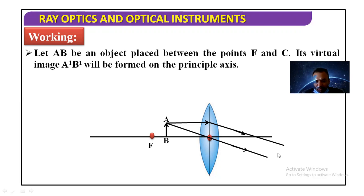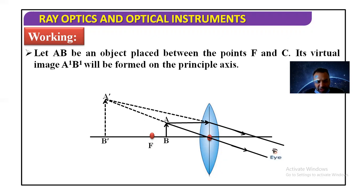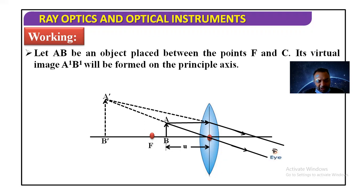There is no chance of formation of a real image on the right side of the lens. So if we extend both rays of light backward, they appear to come from a point — that point is where the image is formed. Finally, we get image A'B', which is enlarged, virtual, and erect. In this way, we get a virtual, erect, and enlarged image of the object AB.